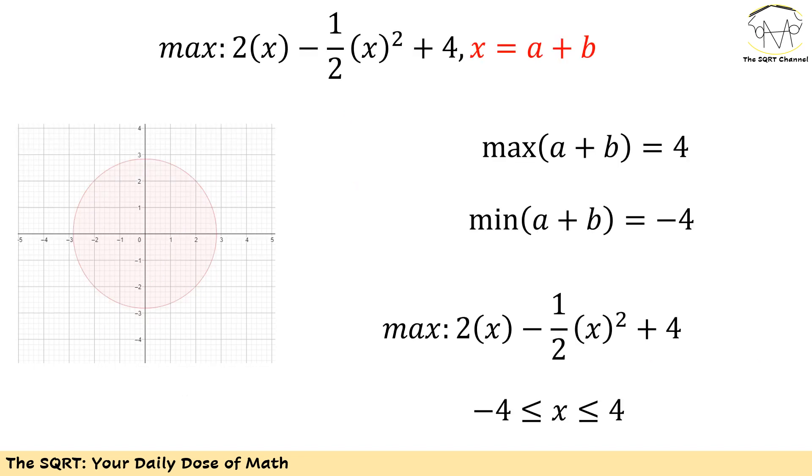So here I have two new facts. First, max of a plus b is going to be 4, and second, min of a plus b is going to be negative 4. I'm going to find max of 2 times x minus x squared over 2 plus 4. The condition that I have is x is between negative 4 and 4 including those numbers. This is going to be an optimization problem now.